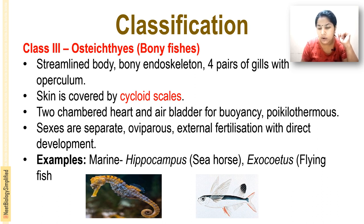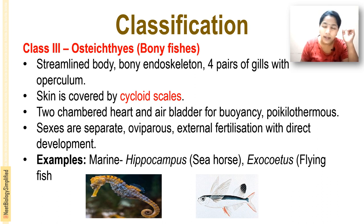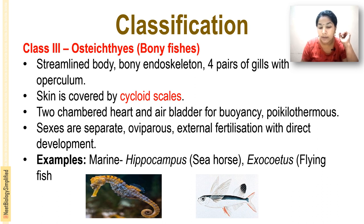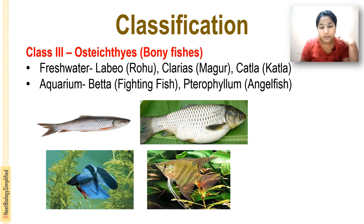Examples of Osteichthyes include marine forms: Hippocampus (seahorse) and Exocoetus (flying fish). Fresh water forms include: Labeo (rohu), Clarius (magur), Katla, and aquarium fish such as Betta (fighter fish) and Pterophyllum (angel fish).